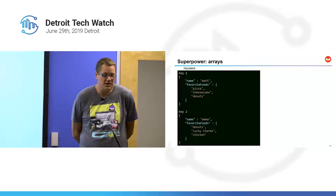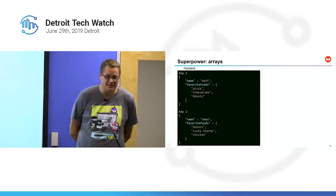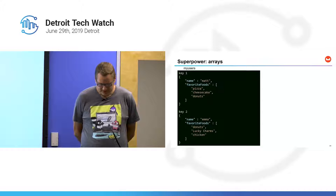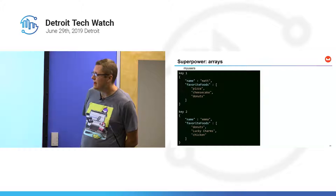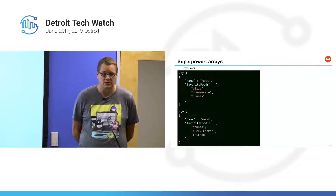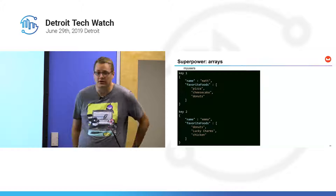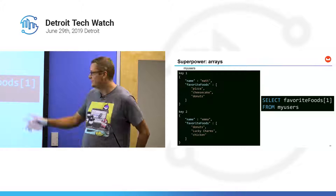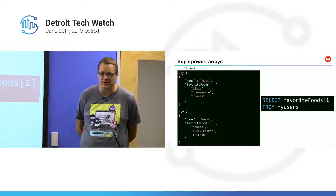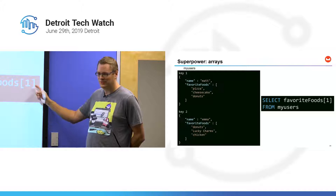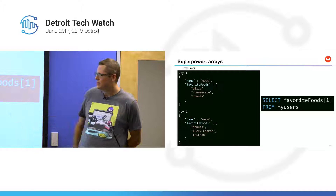What about arrays? We have Matt and Emma each with a favorite foods array. To address the second item in that array — any guesses? Bracket notation: 'SELECT favorite_foods[1]' gives you cheesecake and Lucky Charms. Easy as that — common indexing syntax in many languages, and now in SQL++ too.